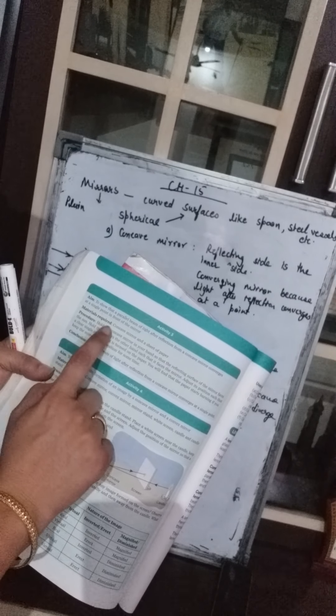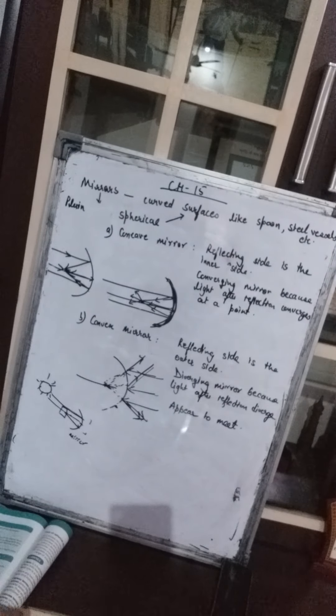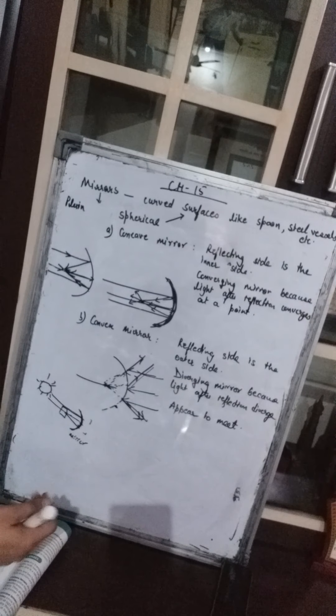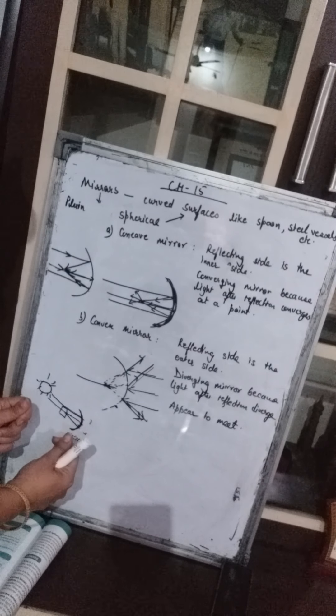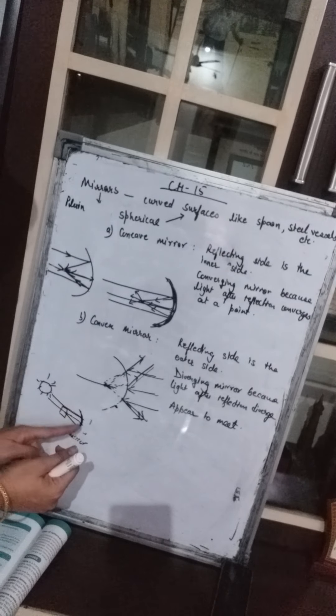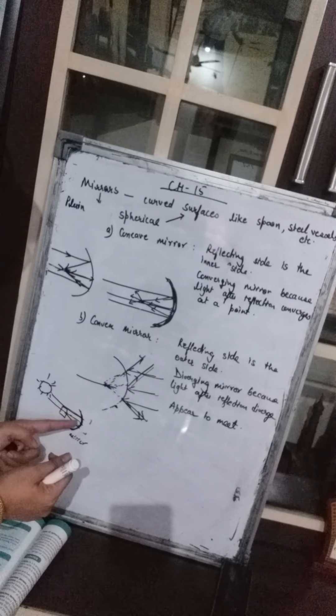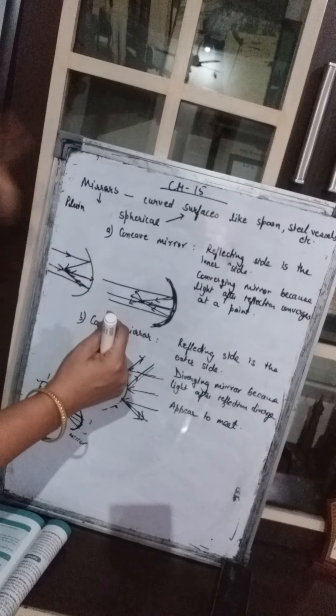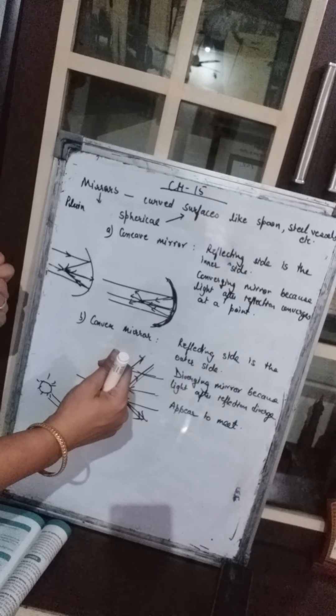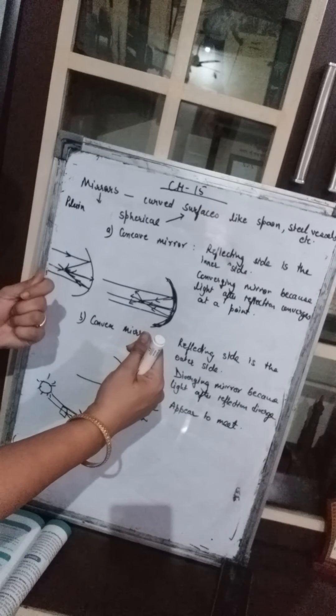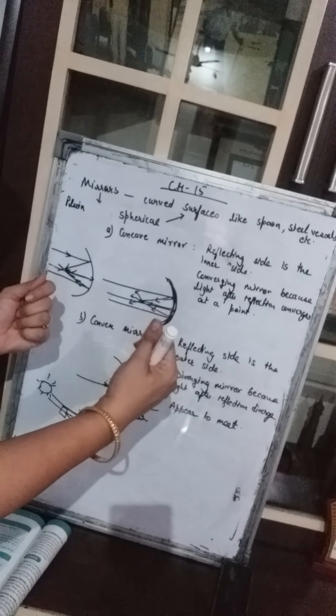Now we will study an activity to show that a parallel beam of light after reflection from a concave mirror converges at a single point in front of the mirror. We take a concave mirror and a sheet of paper. In a concave mirror the inner side is the reflecting side. We hold the mirror so that the sun's light falls on the reflecting inner side — the inner side faces the sun.